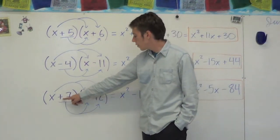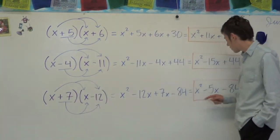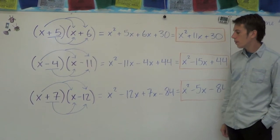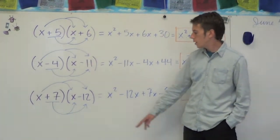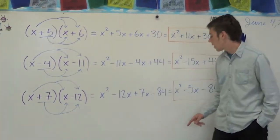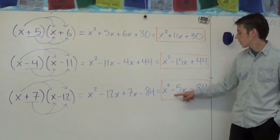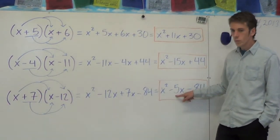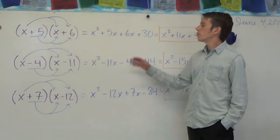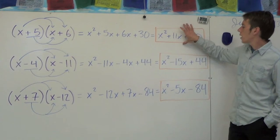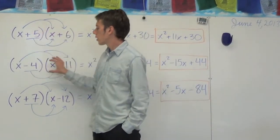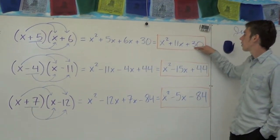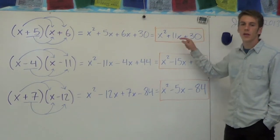In the final example, we have one positive number and one negative number, so their product is going to be negative. Positive 7 times negative 12 is negative 84. And their sum could be positive or negative — in this case it's negative because the negative number has the greater absolute value. So negative 12x plus 7x gets us negative 5x. Once again, the sum of these two numbers gives us the coefficient of our x term. In this video we're using this to work backwards from expanded quadratics to factored quadratics. This is why the trick where you find two numbers that multiply to the constant term and add to the coefficient of x works out.